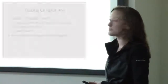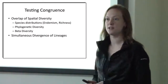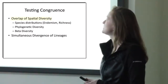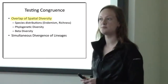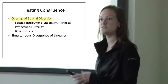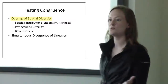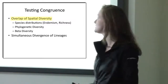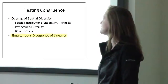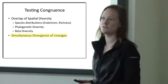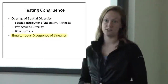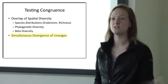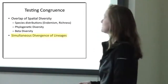To look for congruence, we want to test two different ideas: the overlap of spatial diversity — so where are the most species found, and is this the same area in both data sets? — and simultaneous divergence of lineages, which means they would be responding to the same geologic event.